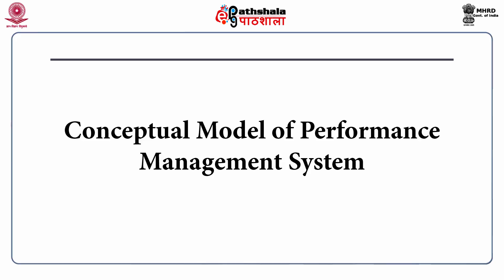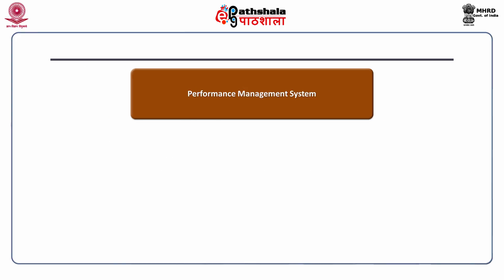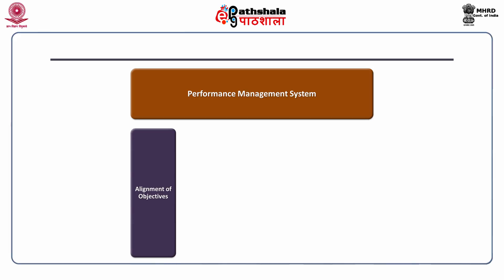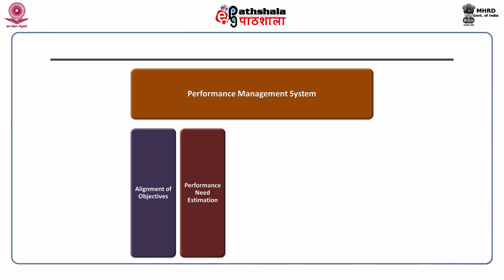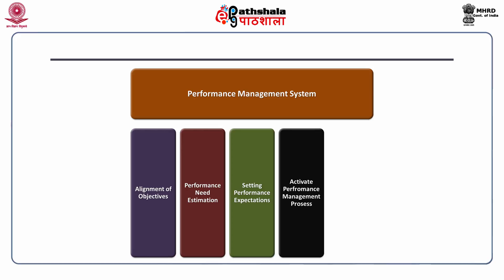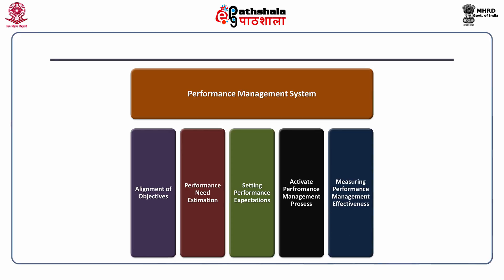Conceptual model of performance management system: the main aim of any performance management system is to improve the performance. Each system works on the basis of connecting various elements of the system logically to get the desired outcome. A performance management system could deliver only through well-laid objectives which are connected through proper measurement of performance followed by a suitable reward mechanism. Various elements of performance management system include: alignment of objectives, performance need estimation, setting performance expectations, activate performance management process, and measuring performance management effectiveness.